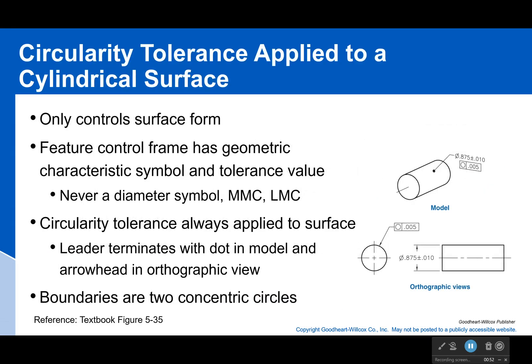If we apply circularity to a cylindrical surface, it only constrains the form — it only constrains the surface form. It will have the feature symbol and a tolerance value. There is never a diameter symbol, and it's never a maximum material condition or least material condition value.